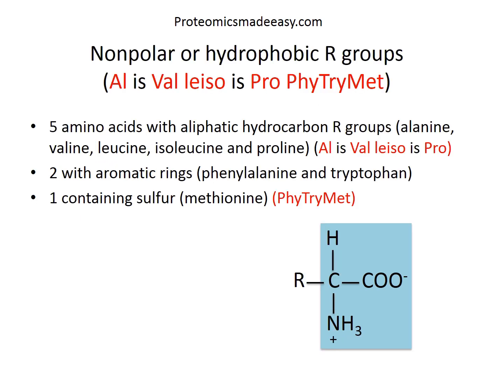Amino acids with non-polar or hydrophobic R groups are less soluble in water than amino acids with polar R groups. This family includes five amino acids with aliphatic hydrocarbon R groups: alanine, valine, leucine, isoleucine, and proline — remembered by the phrase 'all is well, Lisa is pro.' There are also two amino acids with aromatic rings — phenylalanine and tryptophan — and one containing sulfur, methionine, remembered as 'fitrimat.' Together, 'all is well, Lisa is pro, fitrimat' covers all amino acids with non-polar or hydrophobic R groups.